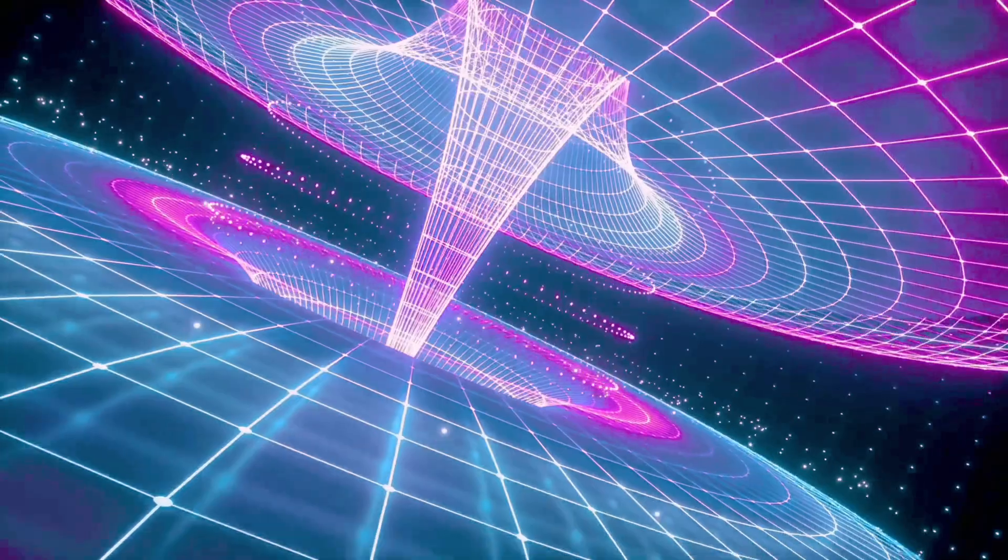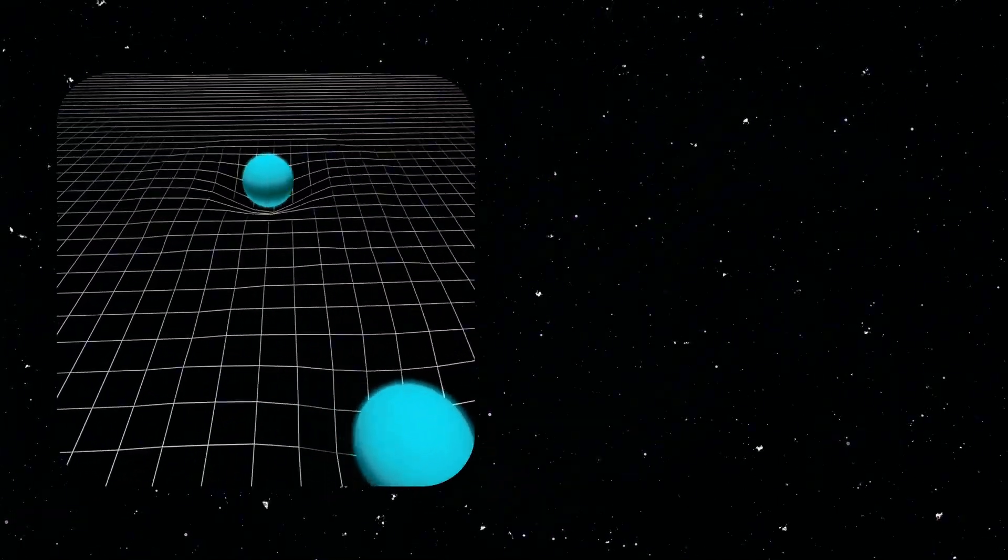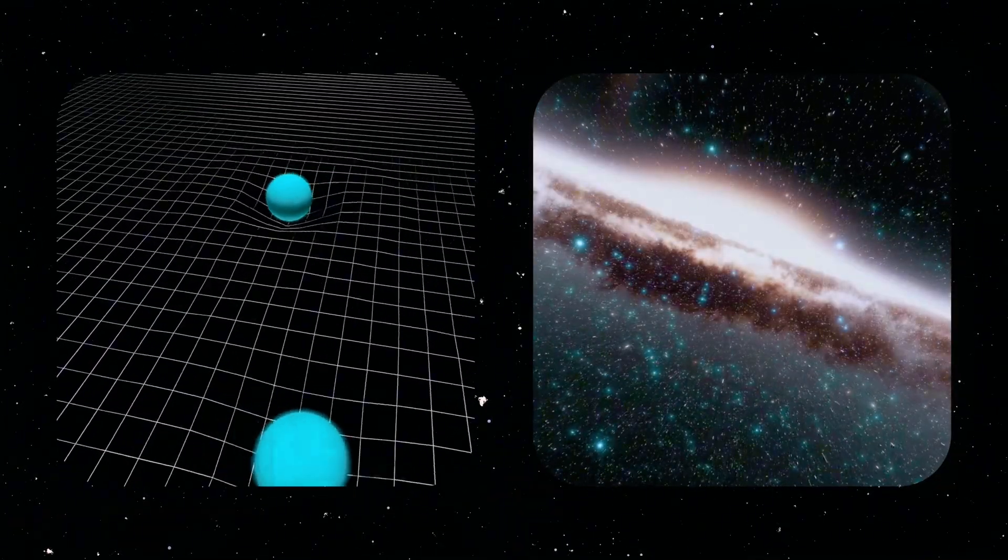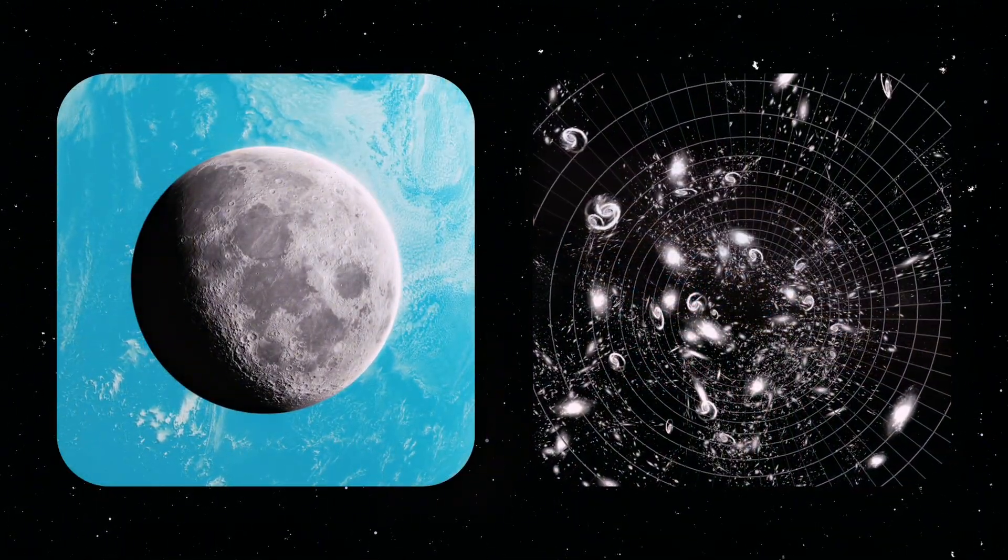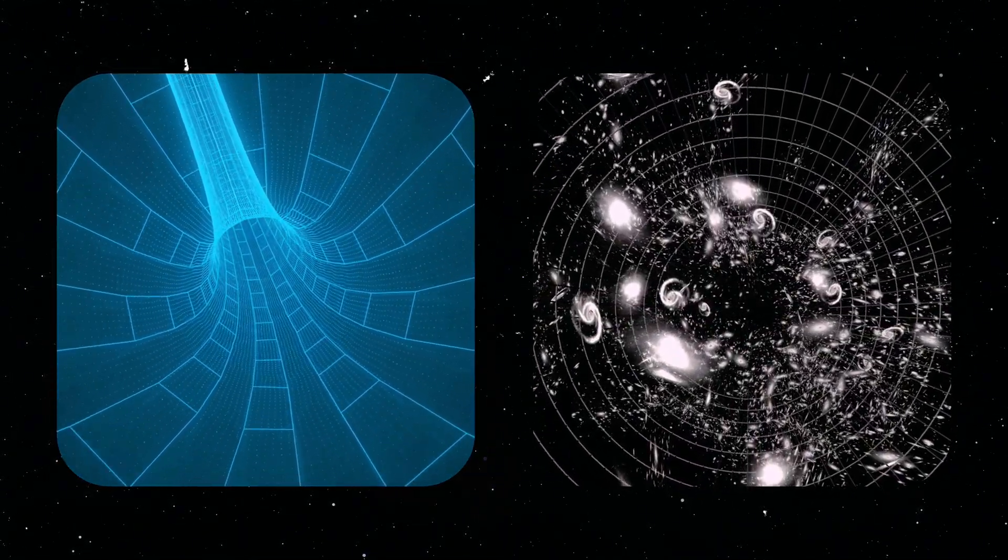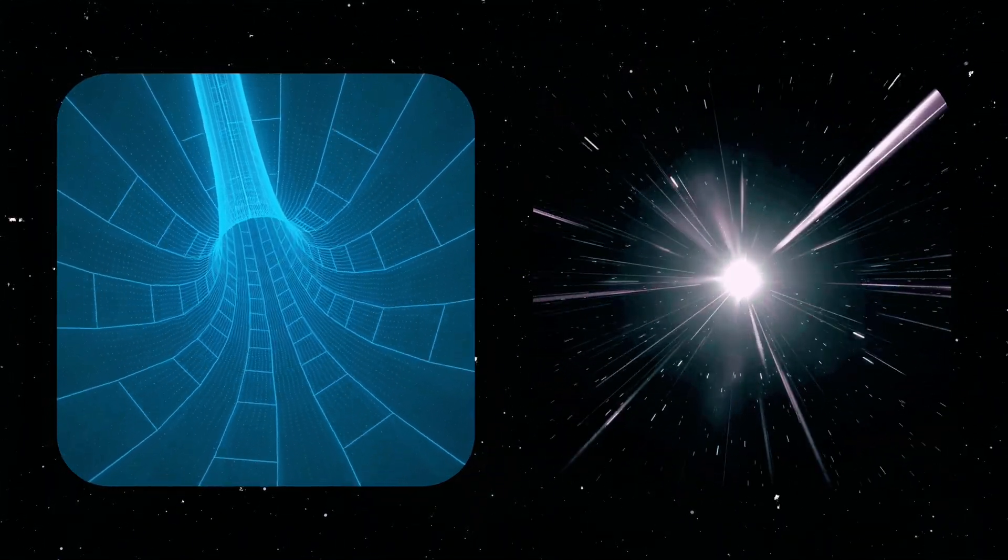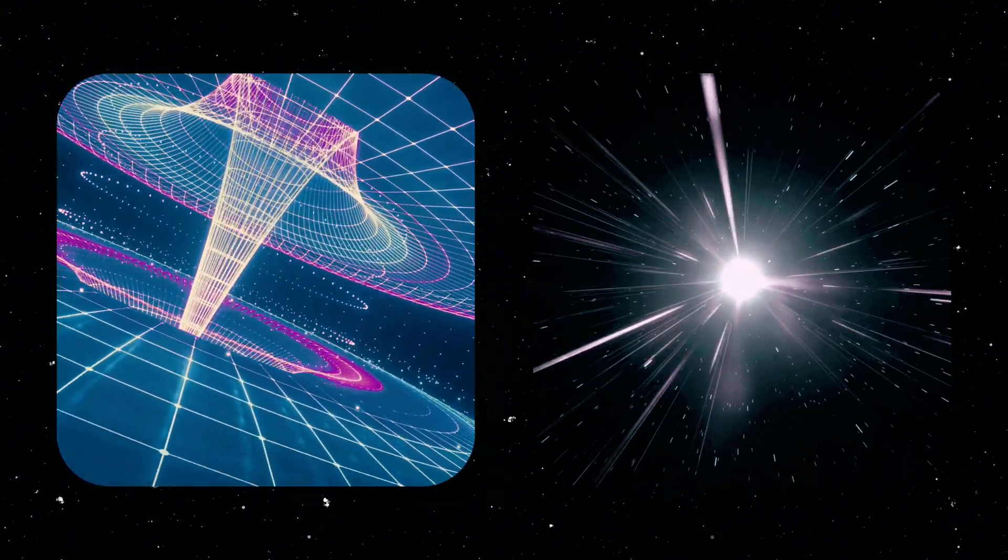But then comes quantum entanglement, a phenomenon that appears to challenge this very rule. Imagine two particles becoming so deeply connected that their states are linked, no matter the distance between them. We're not talking about just a small distance. These particles could be on opposite sides of the universe, yet they remain mysteriously linked.